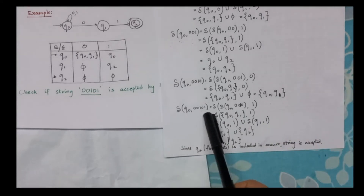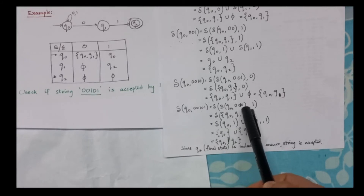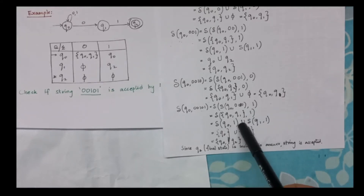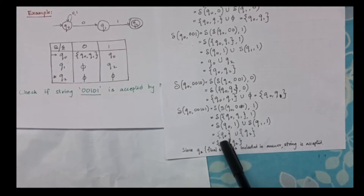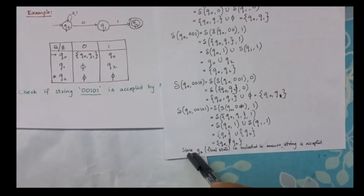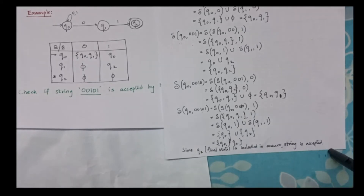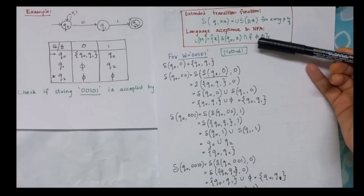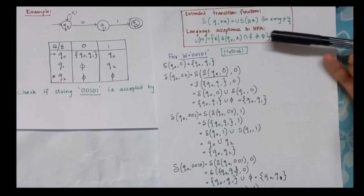For the last step I consider the entire string. Delta of delta of q0, 0010, comma 1. This result is nothing but q0, q1, comma 1. Delta of q0, 1 union delta of q1, 1 — this result is q0, this result is q2. So the answer is q0, q2. If I intersect this set with the final state and I do not get null, meaning the final state is included in the answer, then the string is accepted. The result intersected with the final state, if not null, means the language is accepted.